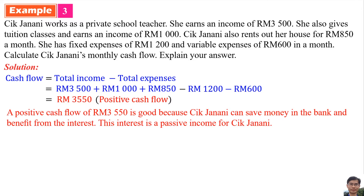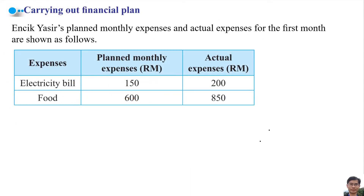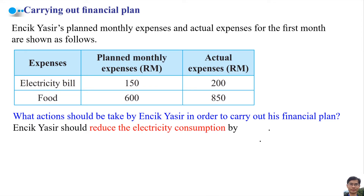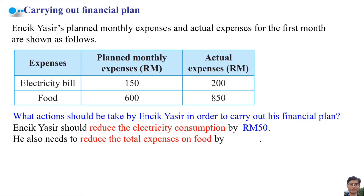We need to carry out a financial plan. In Jay Jasio's plan, the planned expenses and actual expenses for the first month are compared as shown. To carry out his financial plan, Jay Jasio should reduce electricity consumption by 50 ringgit. He also needs to reduce total expenses on food by 250 ringgit.